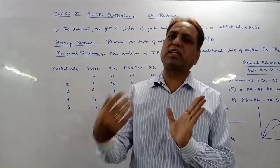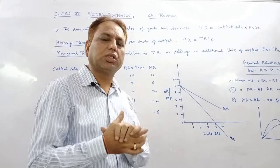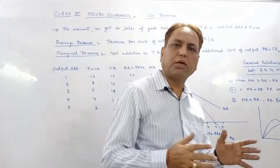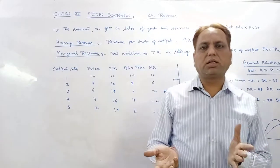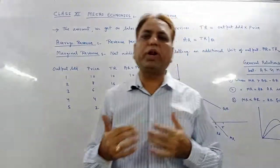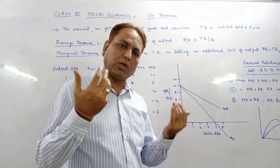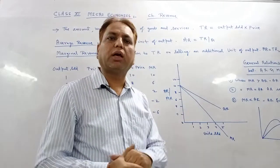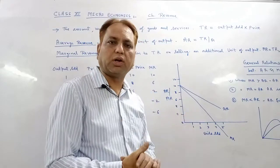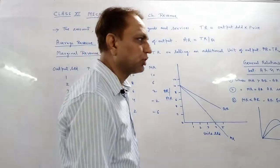Cost was one side. Cost is the total expenditure incurred on producing, on manufacturing a product. We had studied TC, AC, and MC. In Cost, we studied implicit cost, which is on self-owned sources, self-owned factors of production, and explicit cost, which is on hired sources, hired factors. We studied these and their relationship. Hope you all understood everything.